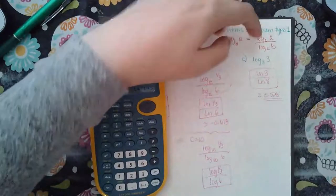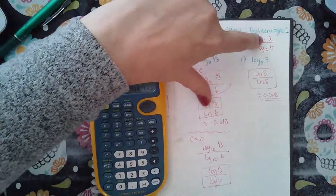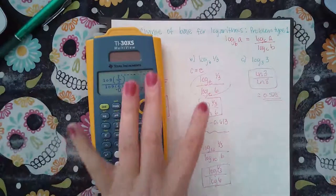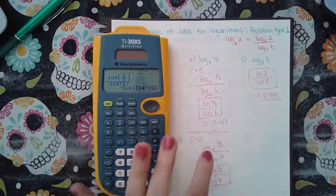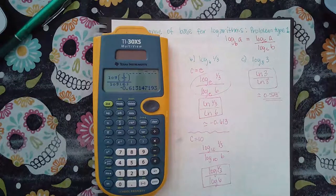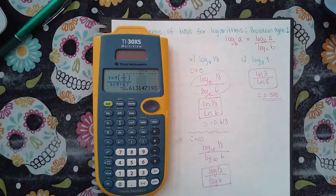What you can't do is have one base on the top like log on the top and then have another base at the bottom like ln, because this rule says that whatever base you use for the top, you have to use the same base for the bottom.